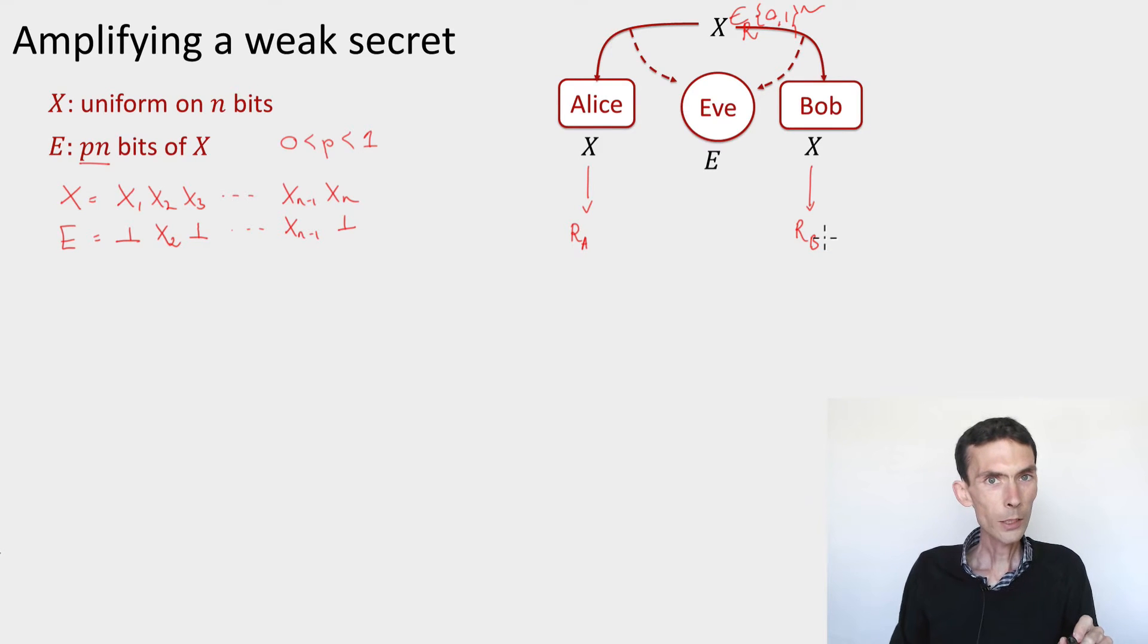Well in this case, one thing that would work is, simple thing, take the parity. So what if you take r to be equal x_1 plus etc. up to x_n? Then the eavesdropper has a subset of these bits.